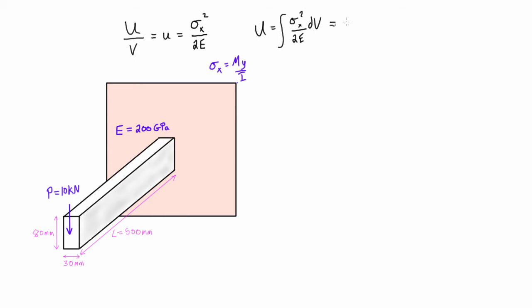Notice it's squared there, so we're going to have to have this integral. Here we have M squared y squared over 2EI squared, and that is still dV. Now we want to get away from dV here because that's just going to complicate things, and we do have a uniform cross-section along the length of this member. So what we can write is we can substitute dV here for dA dx.